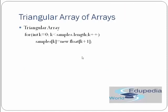Triangular arrays: using a loop initializing k from 0 to samples.length, we assign samples[k] = new float[k+1]. So if the index is 1, that sub-array has size 2; if the index is 3, that sub-array has size 4. This creates a triangular array where each row has one more element than the previous.